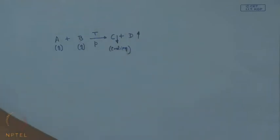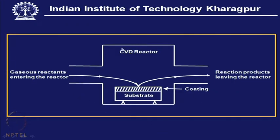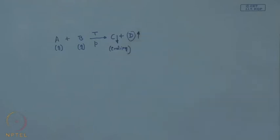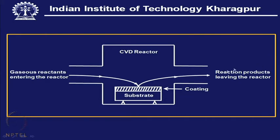Here we see a CVD reactor shown schematically. This is the location of the substrate, and the gaseous reactants are admitted into the reactor in a very controlled manner. They come into the vicinity of the substrate, the necessary reaction takes place over the surface, a solid phase is deposited, and the byproduct leaves the reactor.